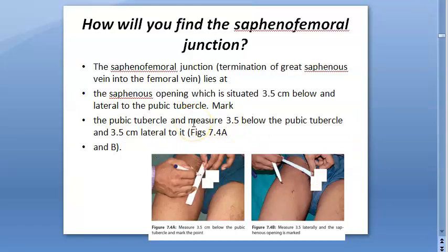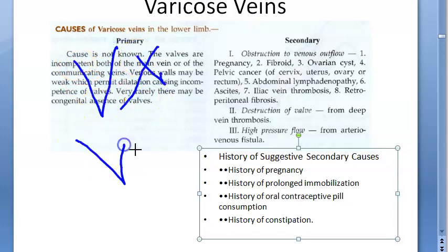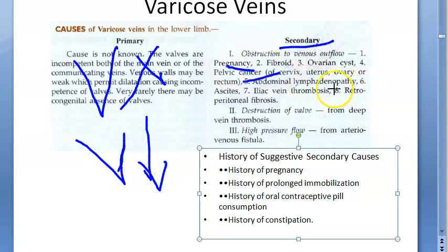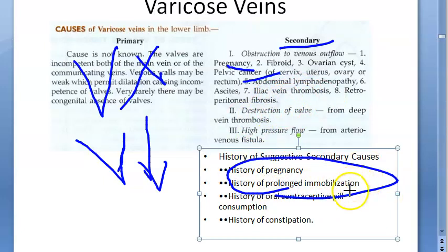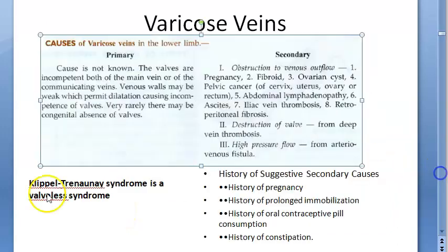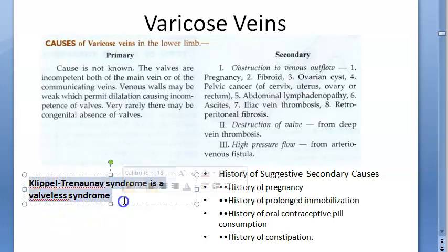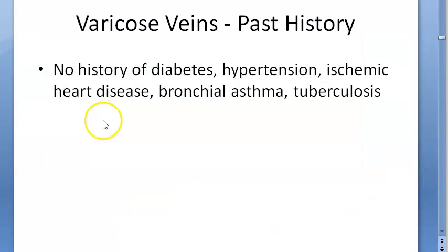You need to know the saphenofemoral junction location for palpation. Varicose veins can be primary (valves absent or weak, cause unknown) or secondary (a known cause such as pregnancy, pelvic cancer, fibrosis, prolonged immobilization, or oral contraceptive pills). Klippel-Trenaunay syndrome is a valvular syndrome — so always ask for family history of similar conditions.